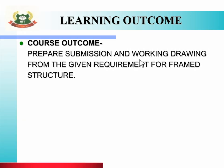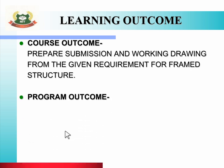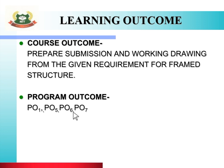The course outcome is: prepare submission and working drawing from the given requirement for frame structure. The program outcome related to this topic includes PO one, PO five, PO six and PO seven — that is Basic and Discipline Specific Knowledge, Engineering Practices for Society, Sustainability and Environment, Project Management and Life Long Learning.